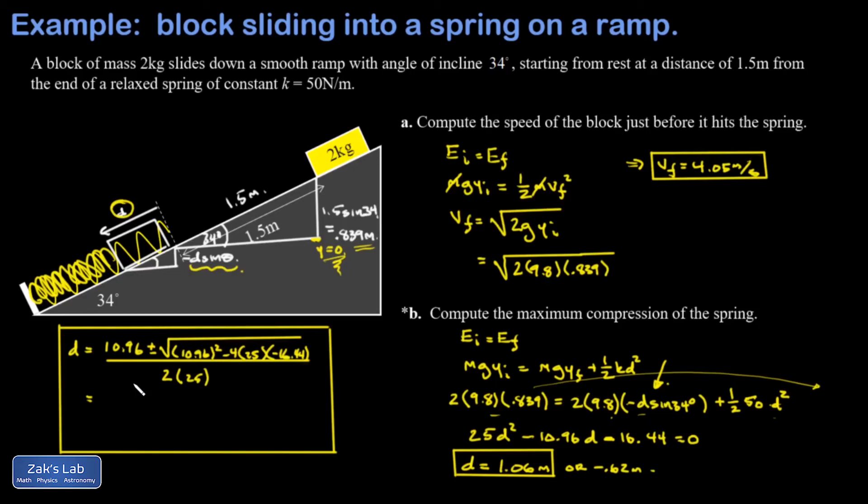So if I'm showing my work the long way on this I'm going to simplify everything in the square root and take the square root of it. This gives me 10.96 plus or minus 42.00 all divided by 50. I can already tell the plus is the one that gives me a positive answer so that's all I'm going to write down and I get my 1.06 meters.